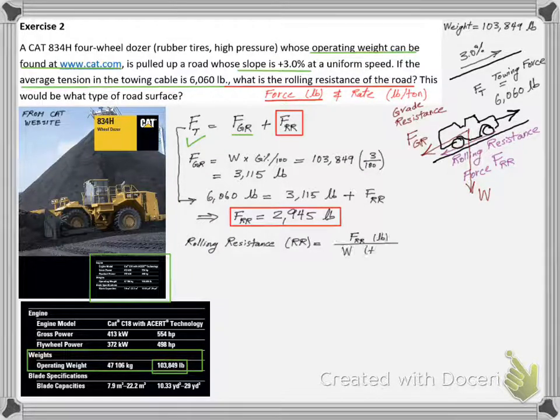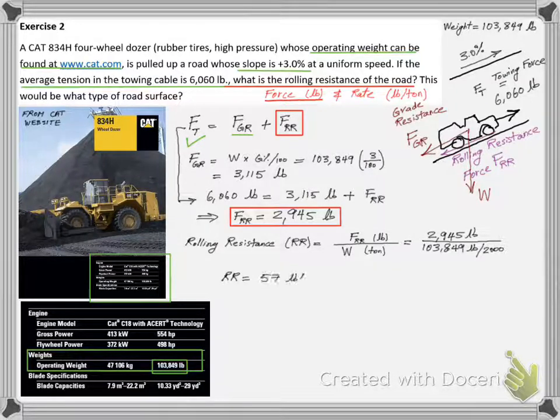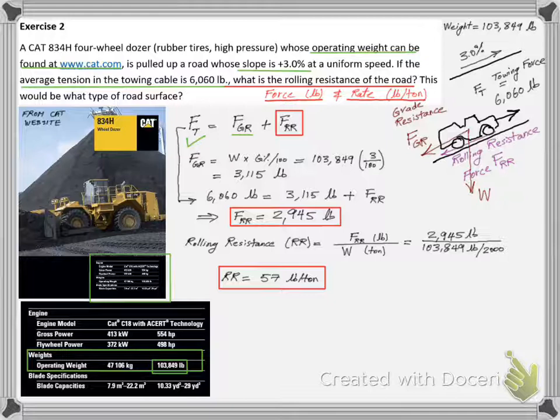The rolling resistance rate RR is basically the ratio between FRR and the machine weight W, which we find it to be 57 pounds of rolling resistance force per each ton of weight.